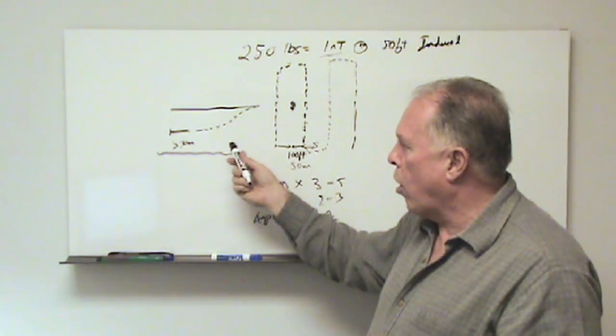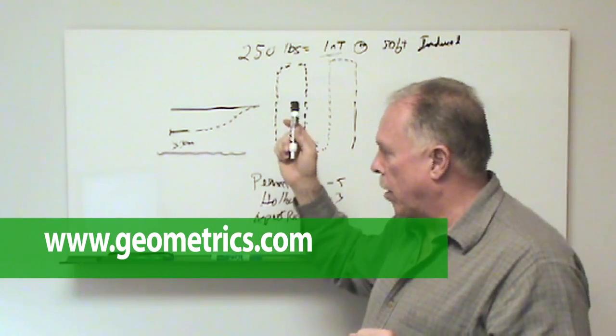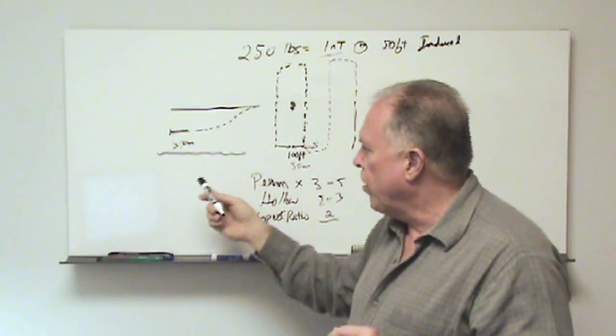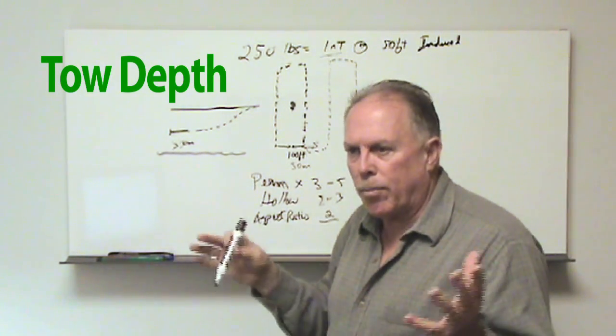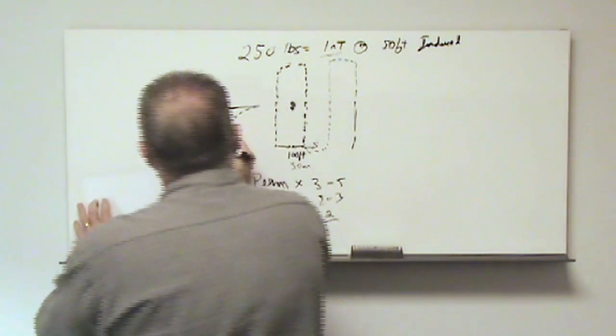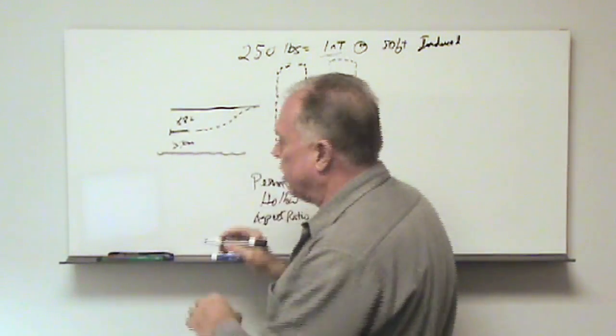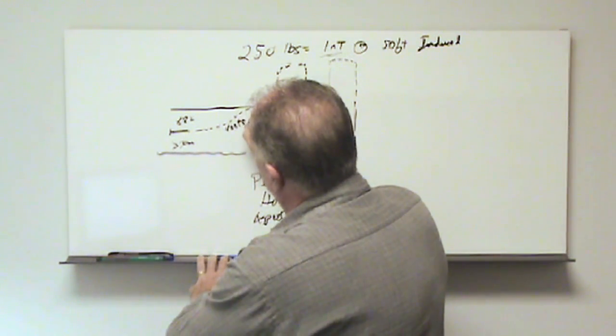We do have on our website under magnetometers, under marine magnetometers, under G882, there is an applet called tow depth. And tow depth is a program that will allow us to put in the type of magnetometer, in this case an 882, put in the type of cable, in this case an aramid fiber Vectran cable or Kevlar cable.